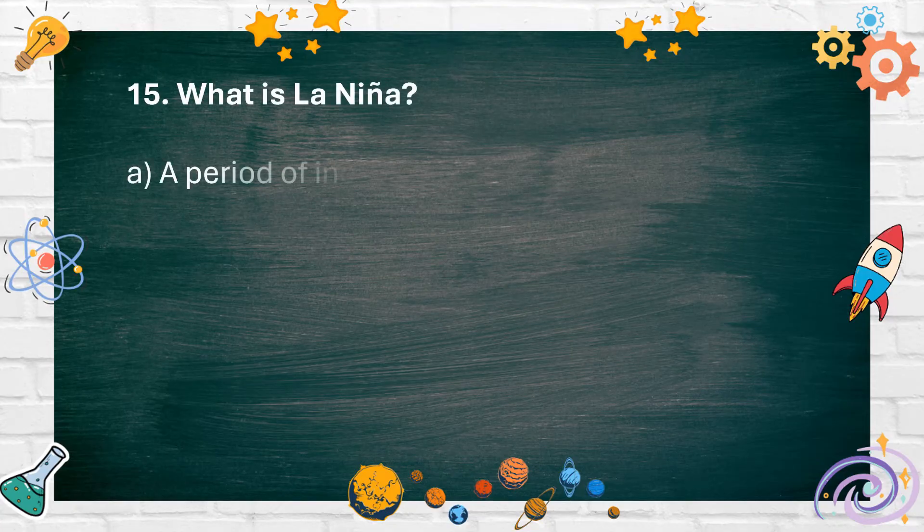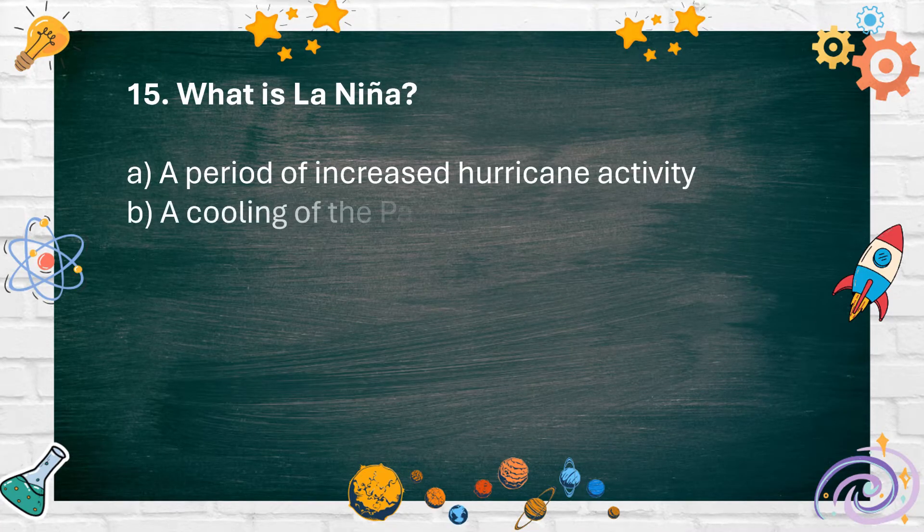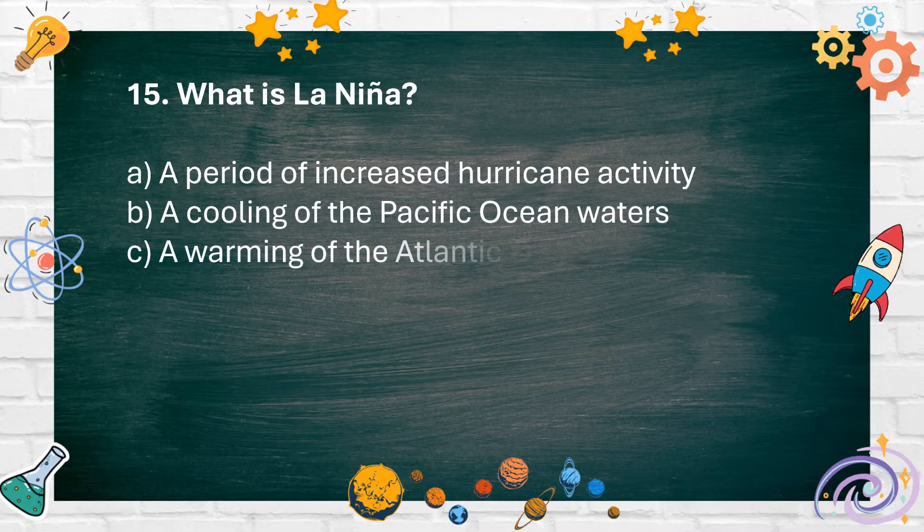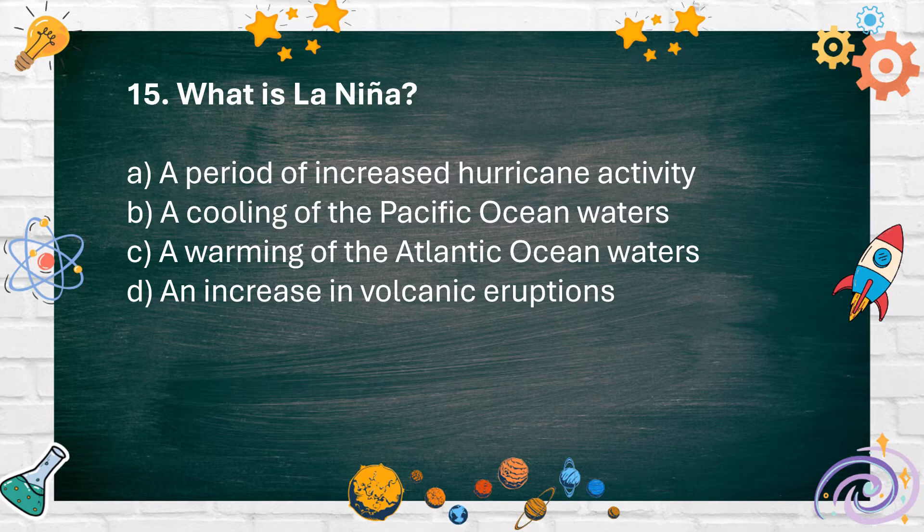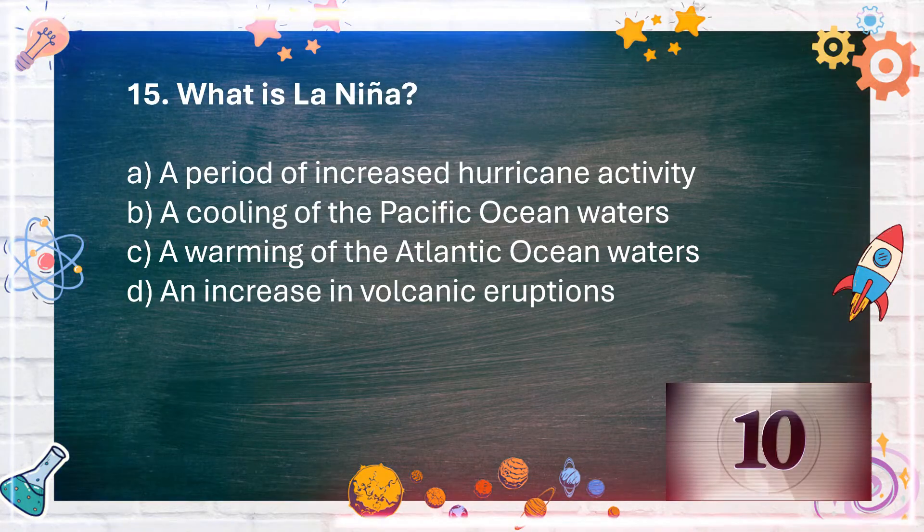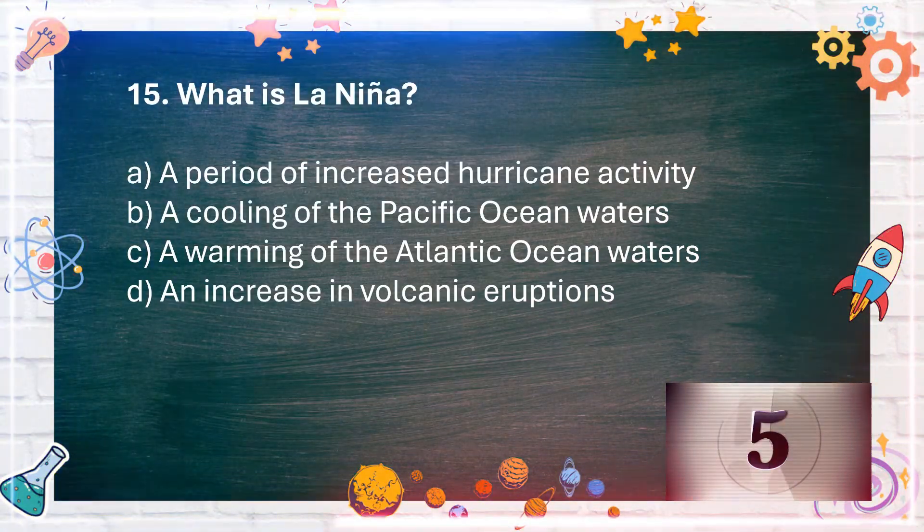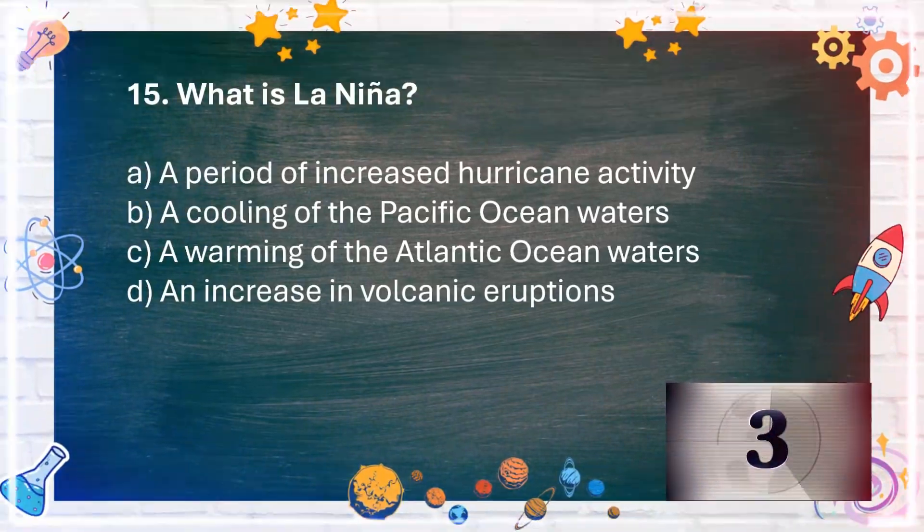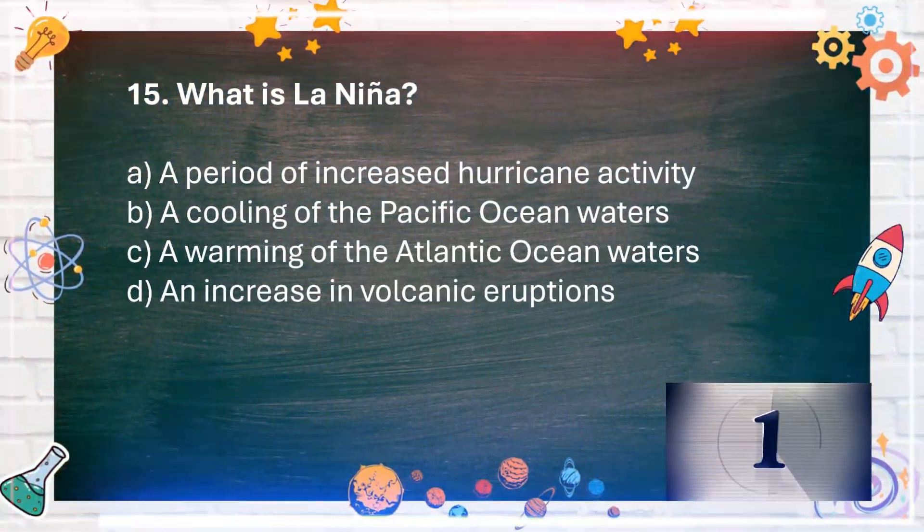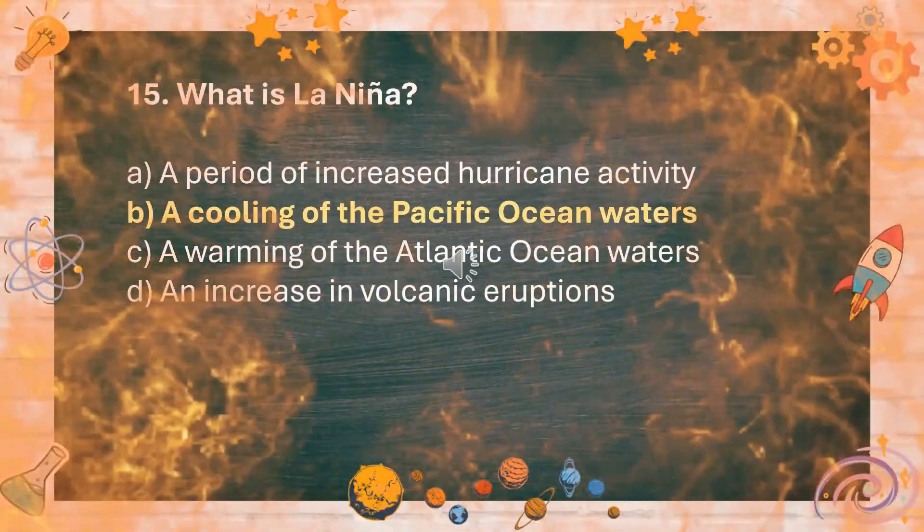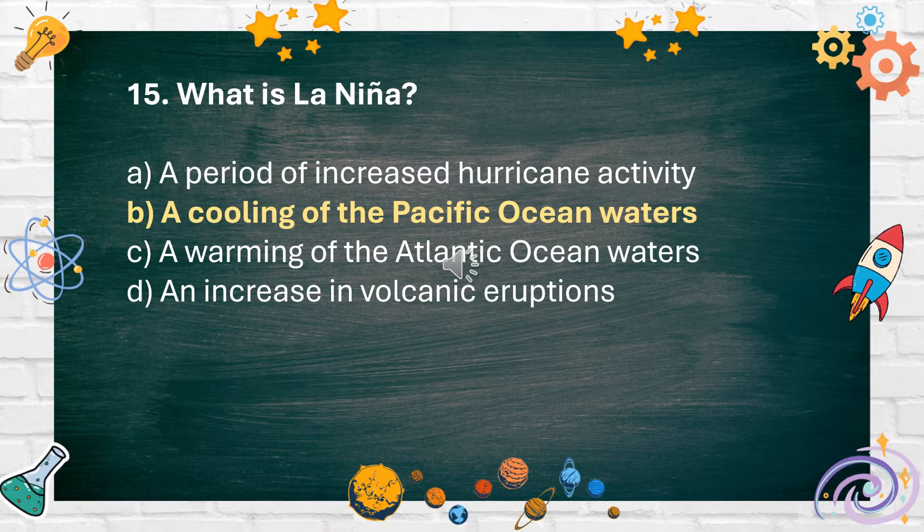Number 15: What is La Nina? A. A period of increased hurricane activity, B. A cooling of the Pacific Ocean waters, C. A warming of the Atlantic Ocean waters, D. An increase in volcanic eruptions. The answer is B. A cooling of the Pacific Ocean waters.